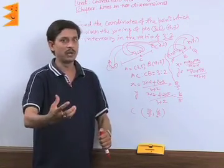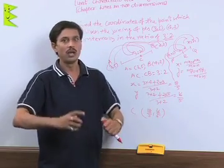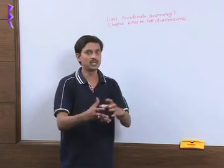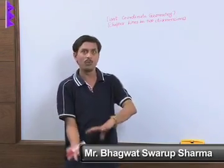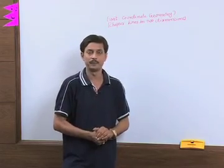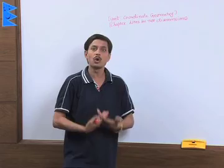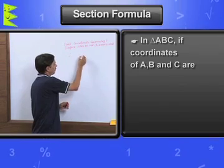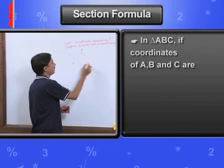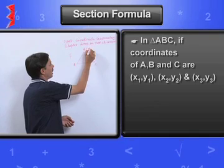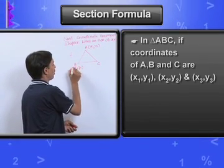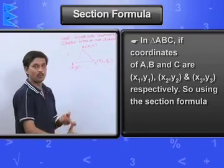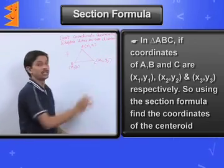So this is one of the uses. Now we will explain you how to use the section formula in some difficult cases. One very commonly asked question using the section formula and midpoint formula - midpoint formula is one of the part of the section formula - prove that, or the proof of finding the coordinates of the centroid. The question is: if triangle ABC has coordinates at A (X₁, Y₁), B (X₂, Y₂), and C (X₃, Y₃), using the section formula find the coordinates of the centroid.